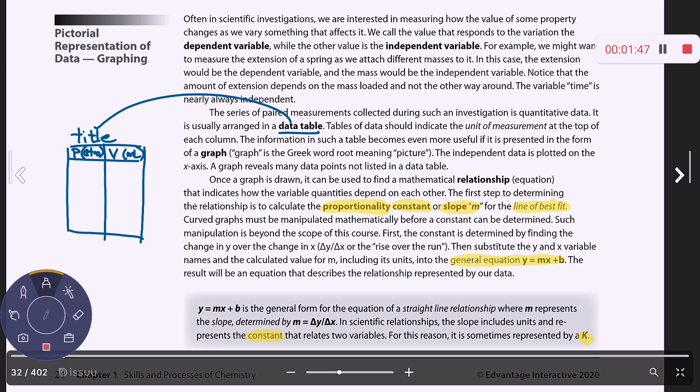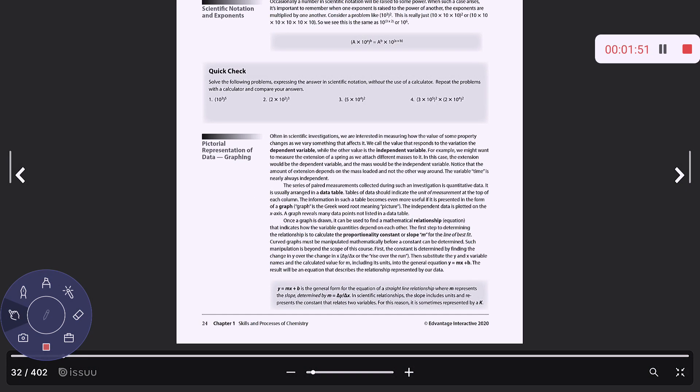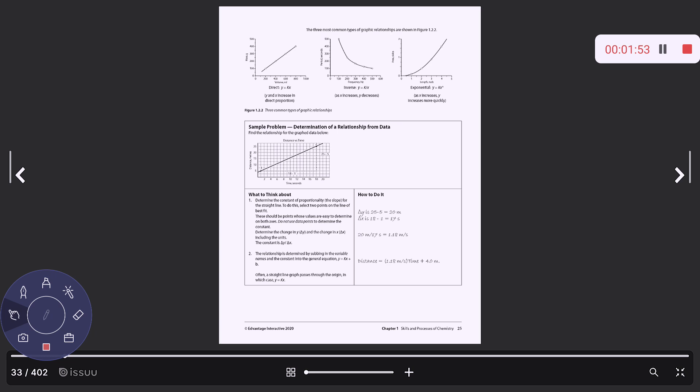On the next page, they give you some examples of the types of relationships that you may see. You will likely see a direct relationship and probably an inverse relationship when we talk about gases, exponential. We might see that when we talk about reaction rates.